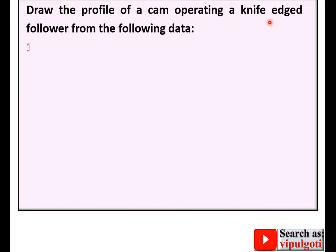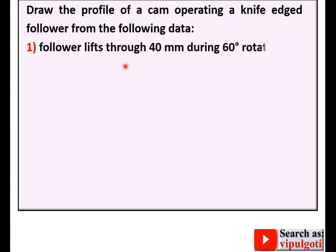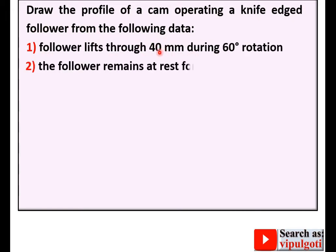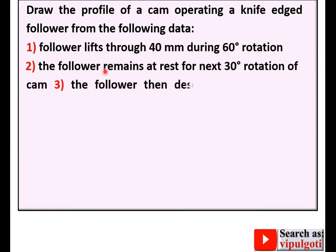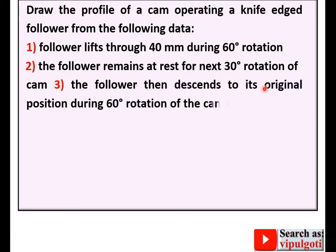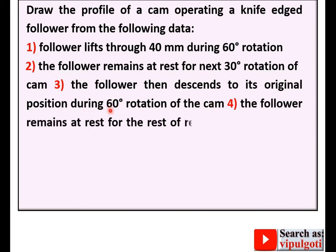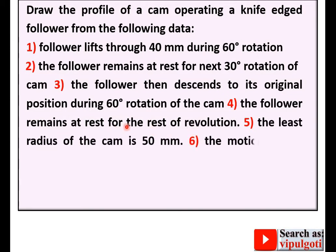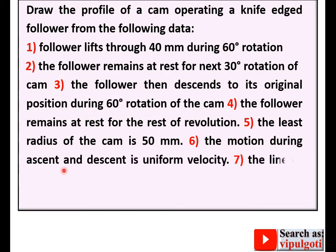Draw the profile of a cam operating a knife-edge follower from the following data. Follower leaps through 40 mm — that is the stroke length — during 60 degree rotation, which is the ascent angle. The follower remains at rest for the next 30 degrees — the dwell period. The follower then descends to its original position during 60 degrees — the descent angle. The follower remains at rest for the rest of the revolution — the second dwell period. The least radius of the cam is 50 mm. Motion during ascent and descent is uniform velocity.